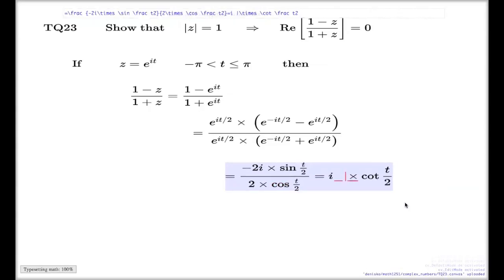And the result will then be negative... negative, obviously not cotangent, but tangent, of t on 2.